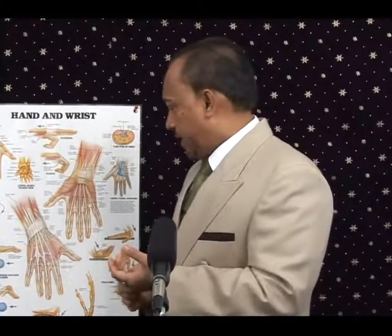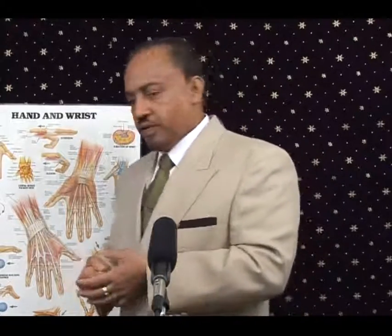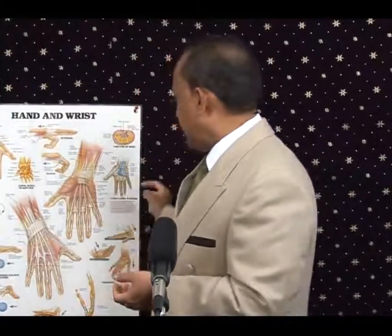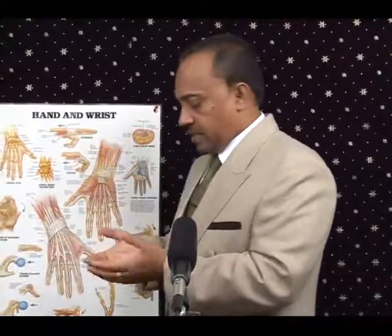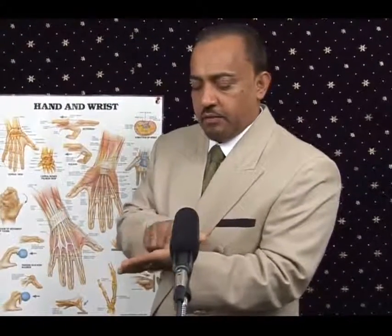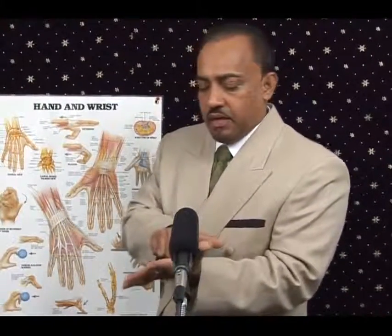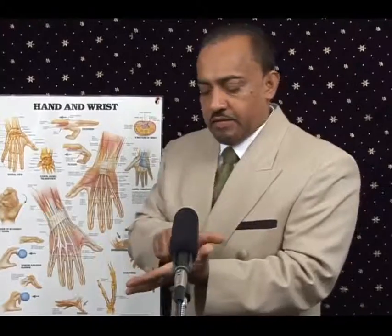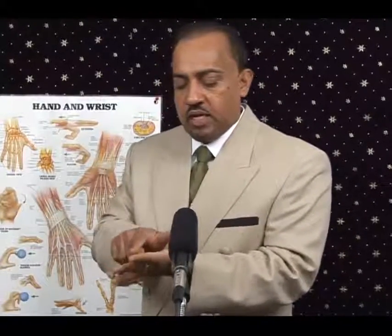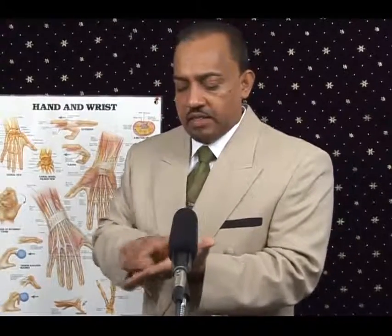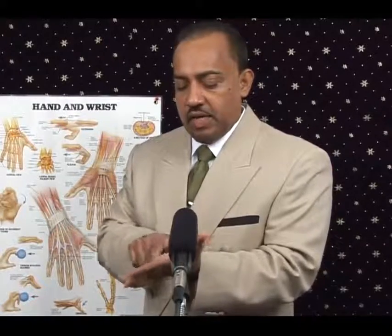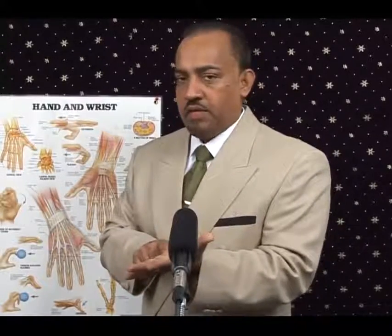You can also get something called Dupuytren's contracture, in which the palmar aponeurosis — which provides ligaments to the joints — can undergo thickening, leading to a contracture of the hand.